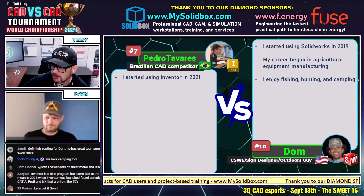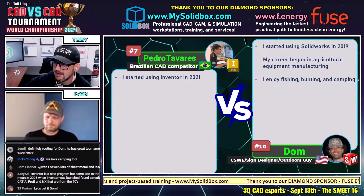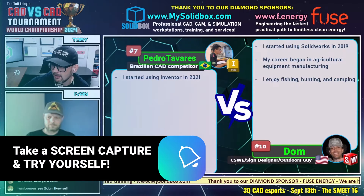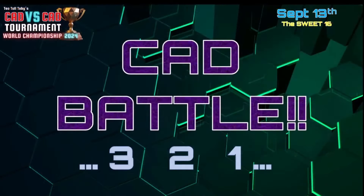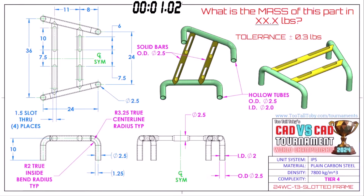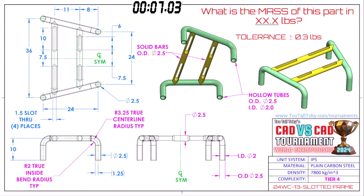Good luck to both of our runners. Good luck to Pedro. This CAD battle between Brazil and the United States, between Inventor and SOLIDWORKS, begins in three, two, one, go. What is the mass of this part in XX.X pounds? Our runners are grabbing a screen capture. This model is called slotted frame. It's in inches, using plain carbon steel — one material for the entire model. Good luck to our runners. The wheel of fate can be cruel sometimes.